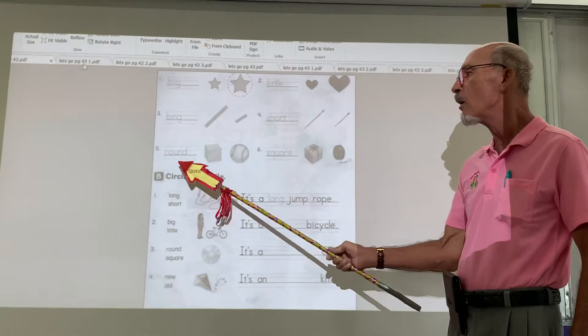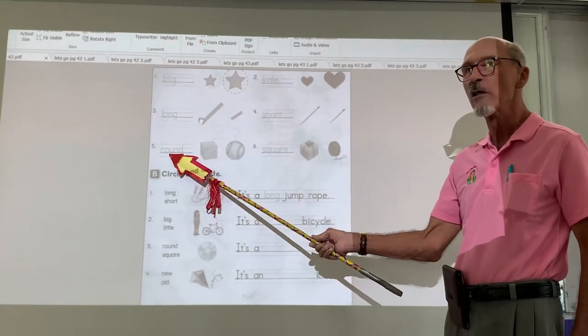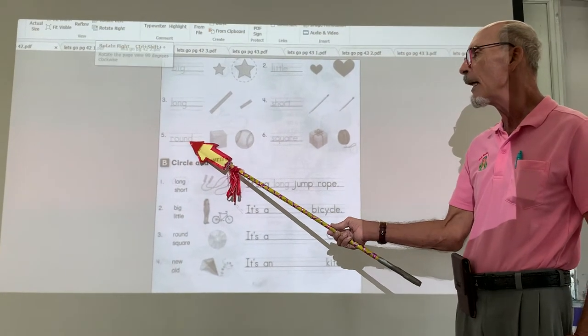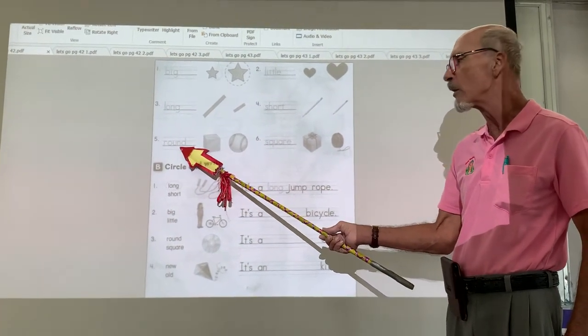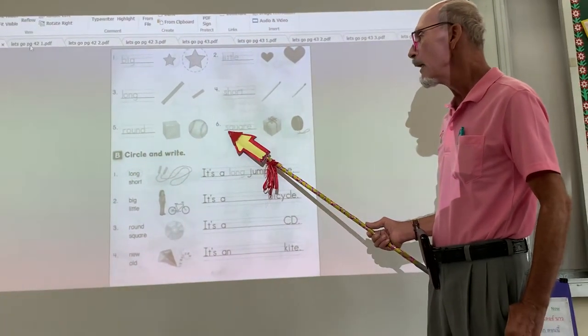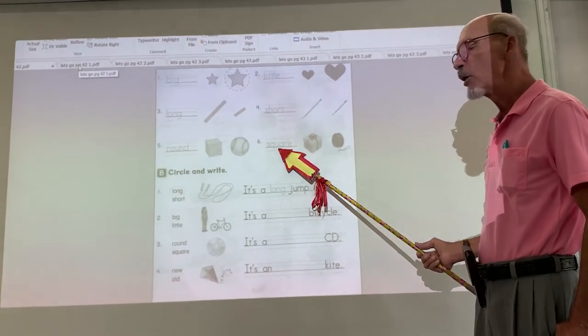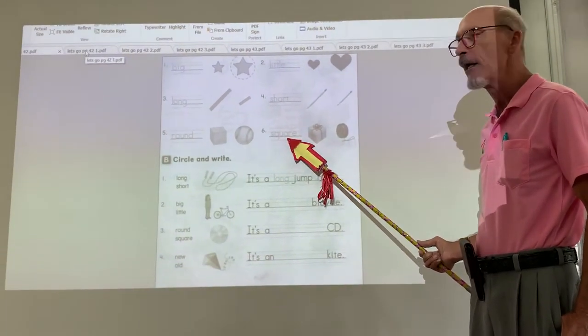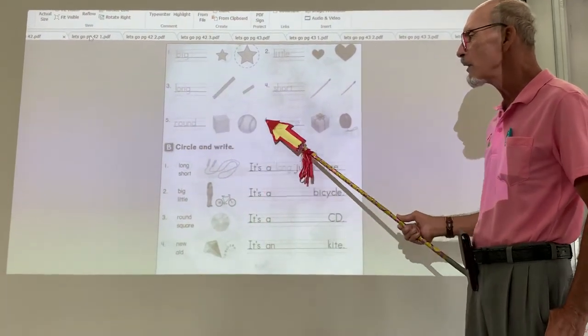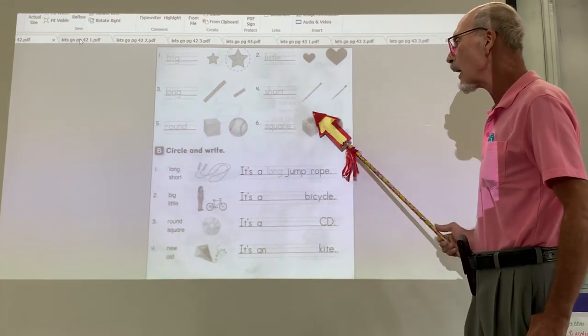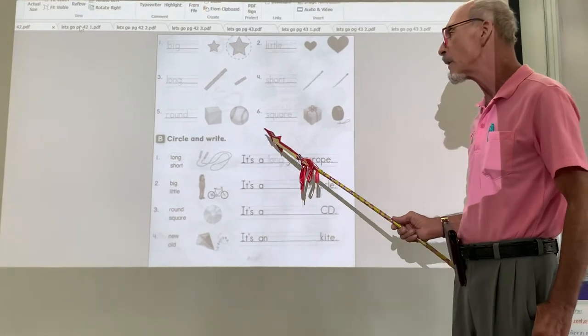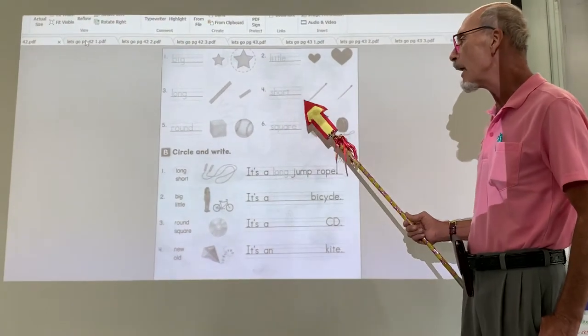This is opposite. Round. R-O-U-N-D. Round. Opposite of round is square. S-Q-U-A-R-E. Now, looking at the picture, which one of these is round, and which one of these is square? I'm going to let you do that on your own. I want to see if you get it right.